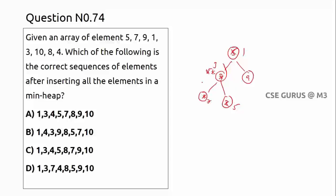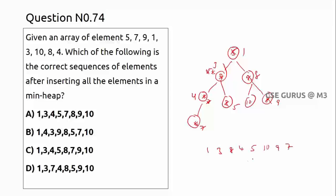Insert 10 — it's greater than 9, fine. Insert 8 — 8 is not greater than 9, so swap. 8 is greater than 1, so no more swapping needed. Insert 4 — 4 is not greater than 7 so swap 7 down, 4 up. 4 is greater than 3, so satisfied. The resulting heap gives the sequence: 1, 3, 8, 4, 5.